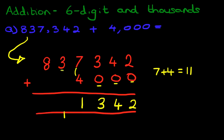As for the ten thousands, we've got three here, nothing here, but we do have to add the one here. So three plus one is four.